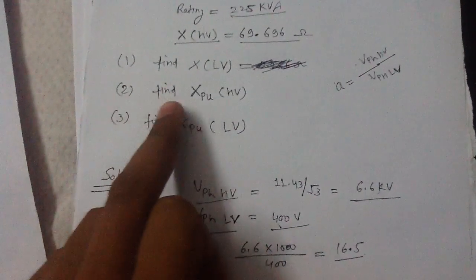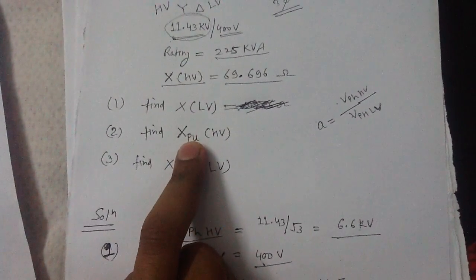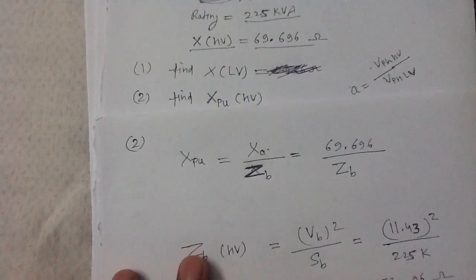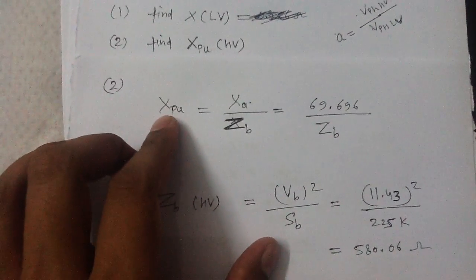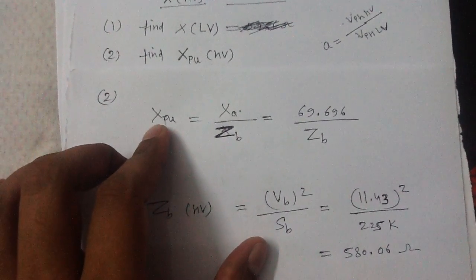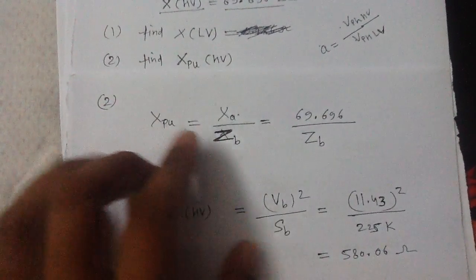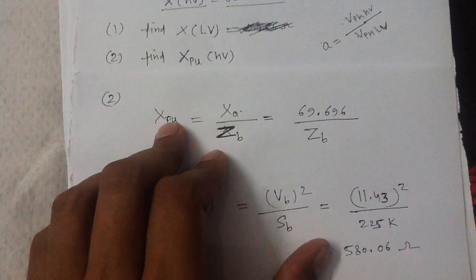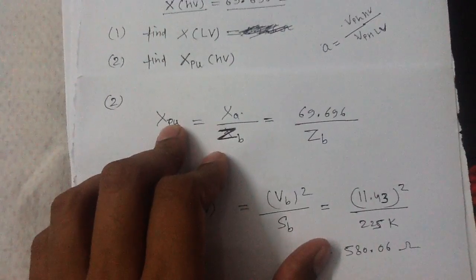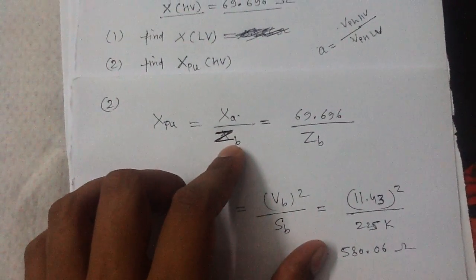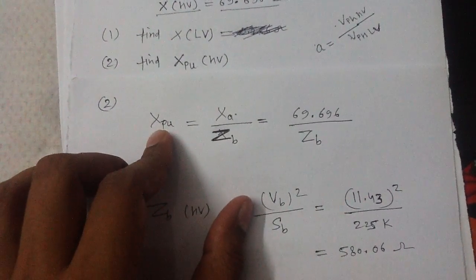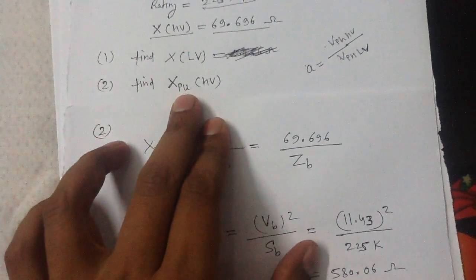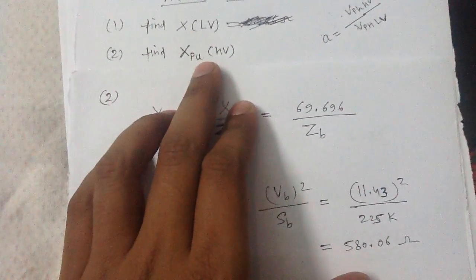The first question is now solved. For the second question, we need the per unit reactance referred to the HV side. The per unit reactance equals the actual value of the reactance divided by the base value of the impedance. This applies whether finding per unit resistance or per unit reactance — the base value used is always the base impedance.